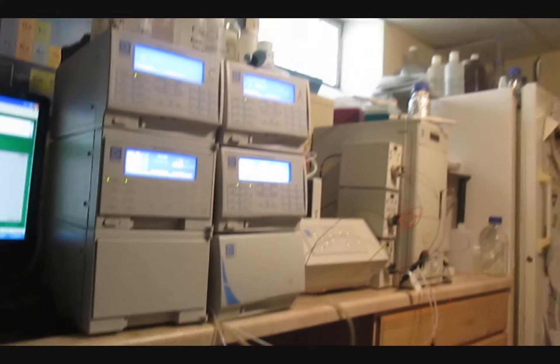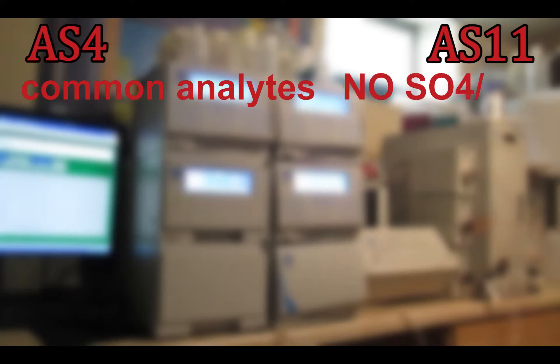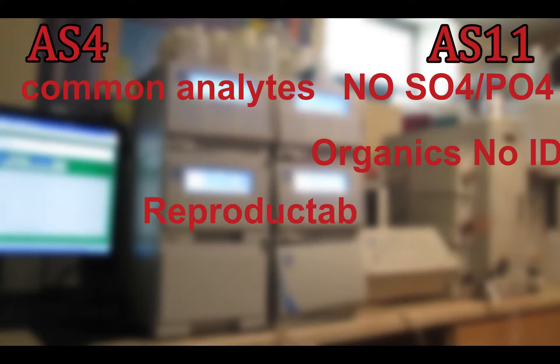But let's compare the two columns' pros and cons. The AS4 is able to detect seven analytes mostly found in nature and industrial application. The AS11 could not reliably pick up sulfate or phosphate at all. The AS11 could easily detect organic anions, but sometimes identification was difficult. Both of these columns had good reproducibility.